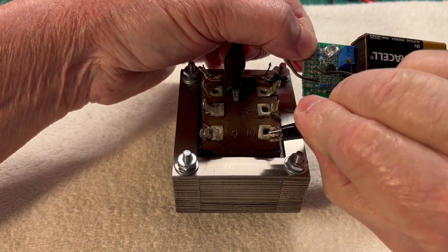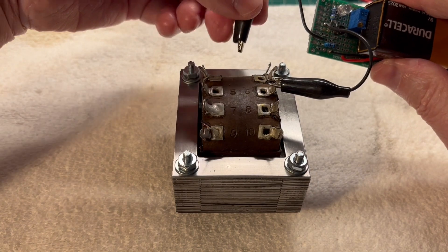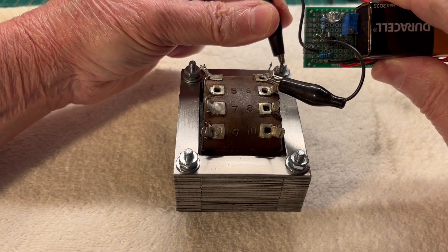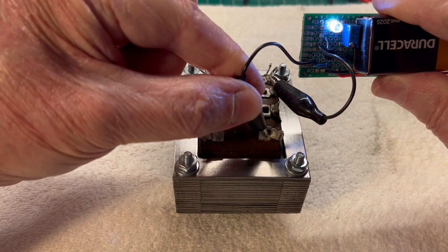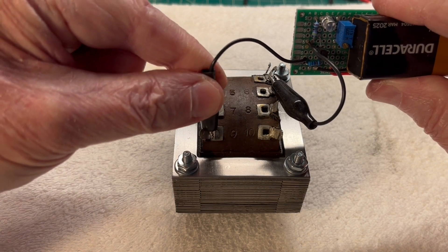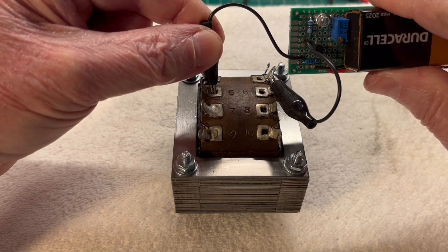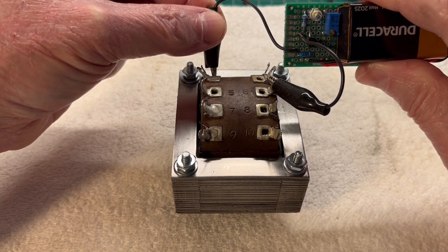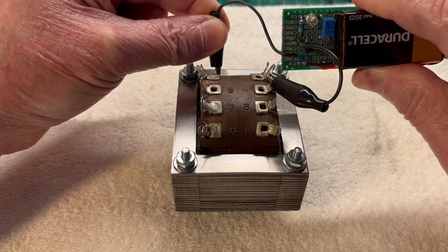Just for the fun of it, we'll check the center tap just to make 100% certain. Nothing to the housing, nothing on four, nothing on eight. Two should illuminate. Shouldn't see anything on nine, seven, five, three, or one. And back to the housing, and we're good.